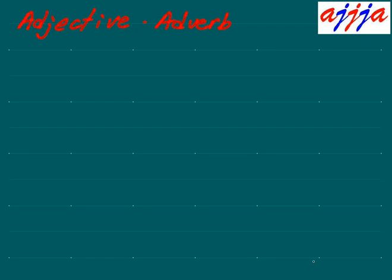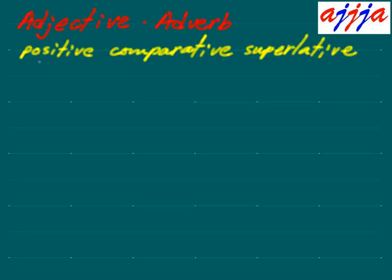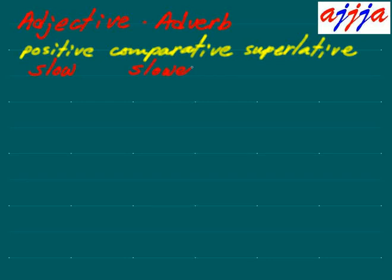Adjective and adverb — today we're looking at degrees of comparison. So this one keeps changing: positive, comparative, superlative. OK, so the regular one — like 'slow.' That's positive. What about comparative? 'More slow'? Actually we can say 'slower,' right? Slower.